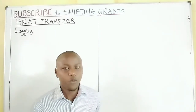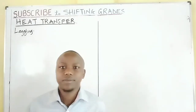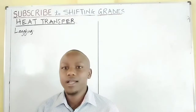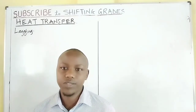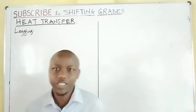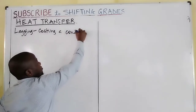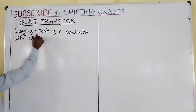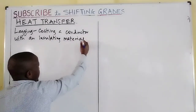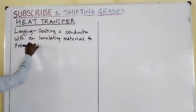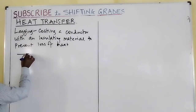Lagging means coating a conductor with an insulator so that heat is not conducted away. An insulator is a material which does not allow conduction of heat. When you coat a conductor using an insulator, heat will be conducted within the conductor but it won't escape into the surrounding, because the insulator does not allow the flow of heat energy. The concept of lagging — coating a conductor with an insulator — is used to prevent loss of heat.